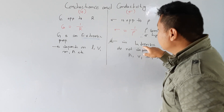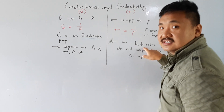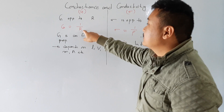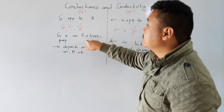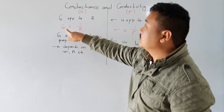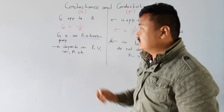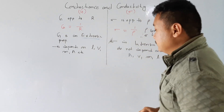Resistivity is also an intrinsic property, as we studied in the last lecture. Similarly, resistance is also an extrinsic property, and therefore conductance is also an extrinsic property.